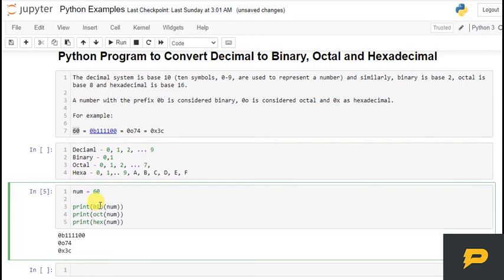So bin stands for binary, oct stands for octal, and hex stands for hexadecimal. These three methods are used to convert from decimal to binary, octal, or hexadecimal.